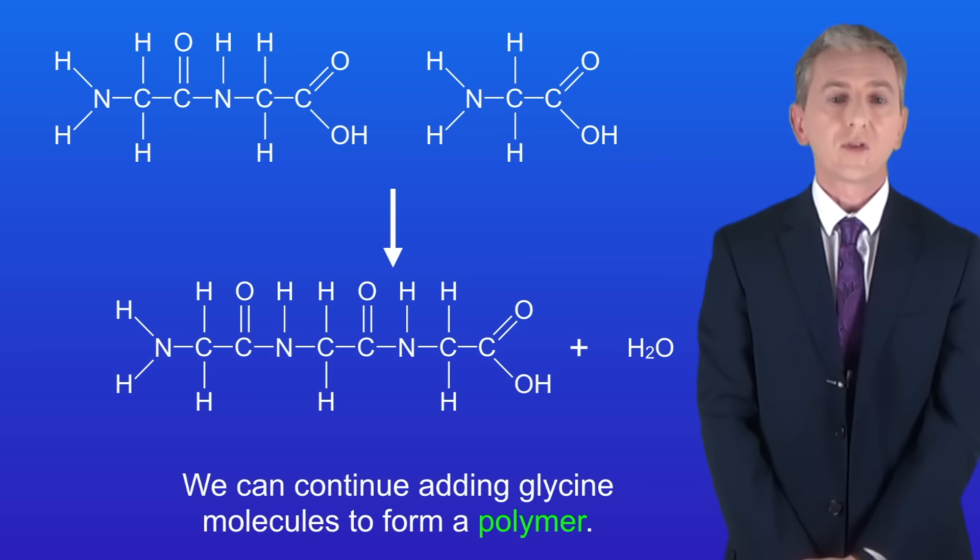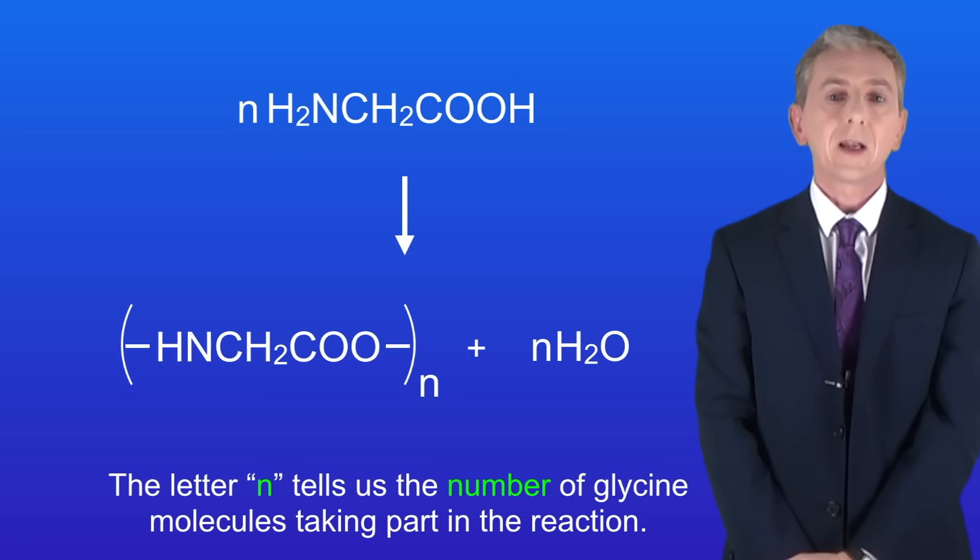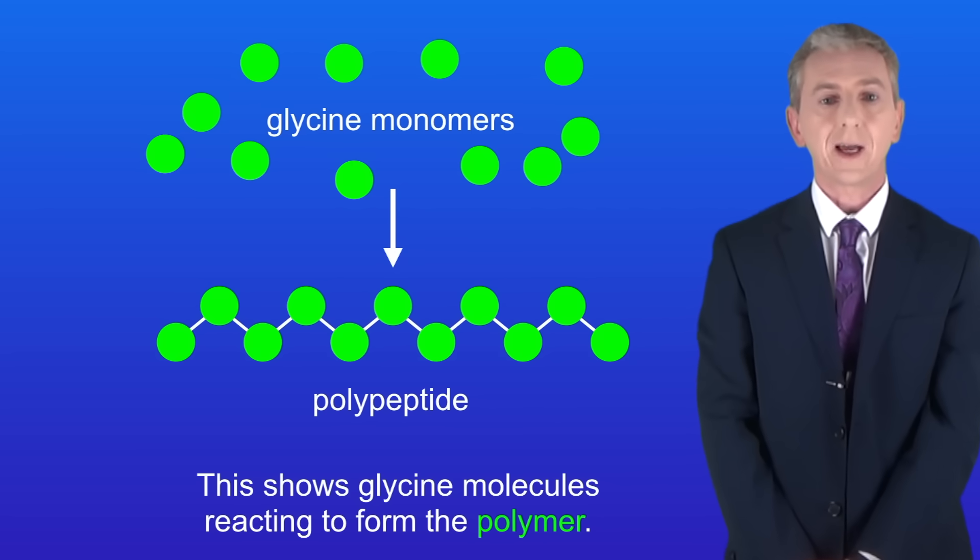Now we can represent this reaction in a simpler form like this. The letter N tells us the number of glycine molecules taking part in the reaction. So here I'm showing you glycine molecules reacting to form the polymer.